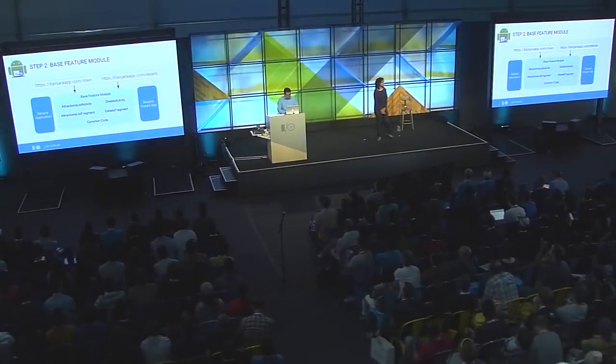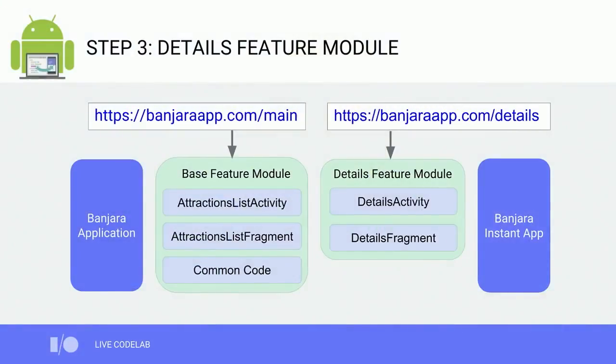So we have our first functional Instant App. Now let's move on to step three — we're going to extract the details experience into its own feature module. We're introducing a new feature module and refactoring code out of the existing base module into that feature module. We'll then update the application module and the Instant App module to now build from two feature modules.